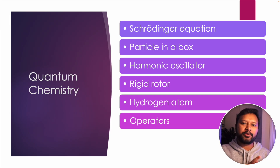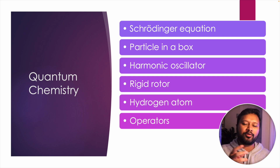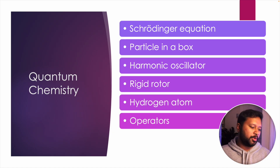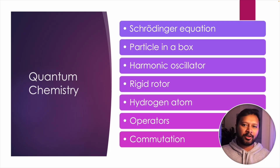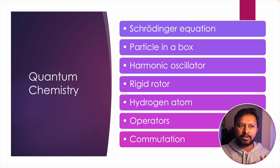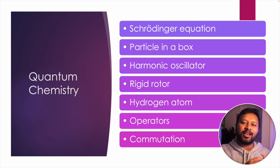In quantum chemistry, operators are the most important thing — the formulas for different operators and how to find the value of an operator when a wave function is given by calculating the eigenvalue. Then come commutators: what they are, why they are so important in quantum chemistry, and different questions related to them — like commutation of x and p_x. Shortcuts related to these are all covered on my YouTube channel. Most topics I've discussed so far are available there; just search the topic name and my channel name.